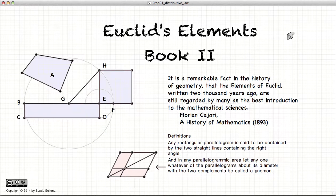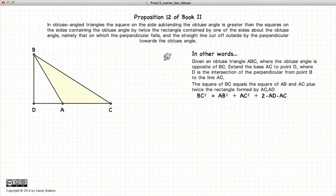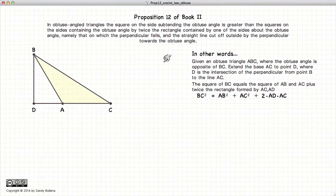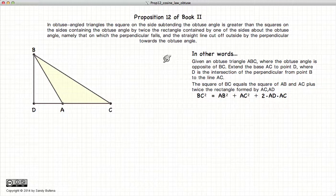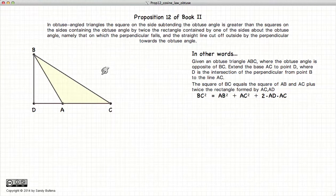Hi, and welcome to my tutorials on Euclid's Elements Book 2. This video presentation is on Proposition 12 of Book 2, which talks about the properties of an obtuse triangle.